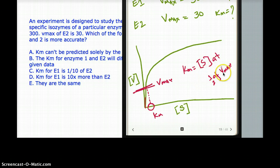Km is equal to the substrate at half of Vmax. So this is not a direct relationship but you can find the substrate, you can find the Km if you have this substrate.